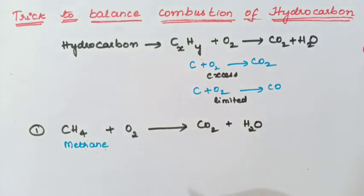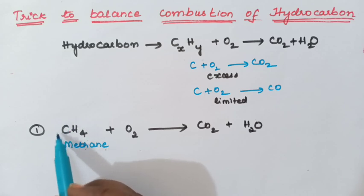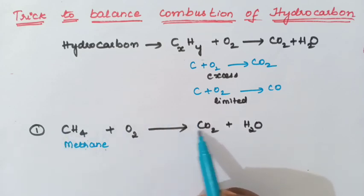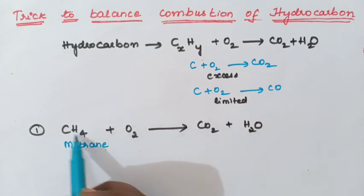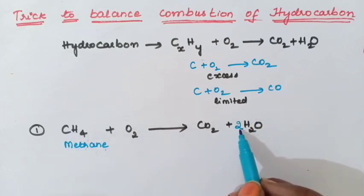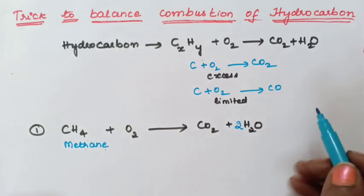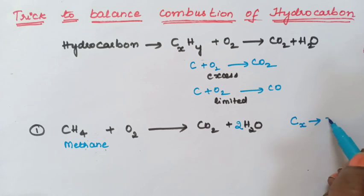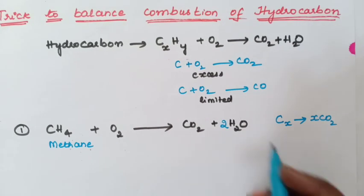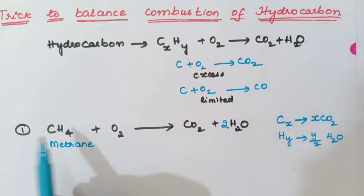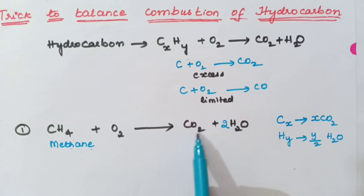So how to balance this? Always count the number of carbon atoms. If there is only one carbon, then only one carbon dioxide molecule will be formed. Hydrogen is 4; half of that — that is 2 — gives the number of water molecules. So 2 water molecules will be formed. The general rule: if C is X times, then X carbon dioxide molecules are formed; if H is Y times, then Y/2 water molecules are formed. Count the carbons — same number of CO2; count the hydrogens — half that number of H2O.